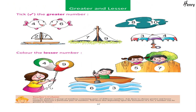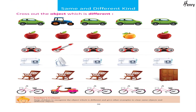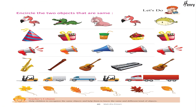Greater and Lesser: Take the greater number; color the lesser number. Lesser than and greater than — lesser than sign, greater than sign. Let's do — read the numbers and put lesser than and greater than signs. Same and Different Kind — cross out the object which is different. Let's do — encircle the two objects that are the same.